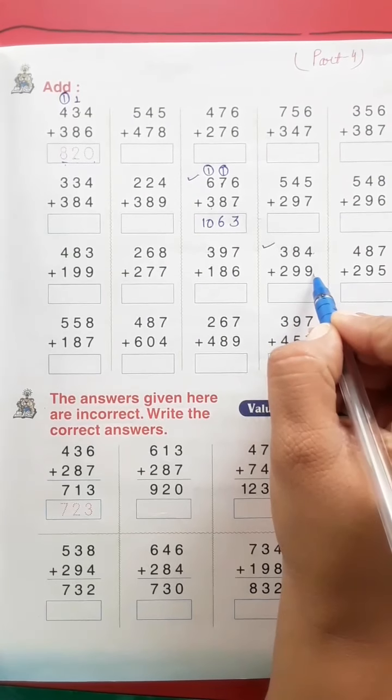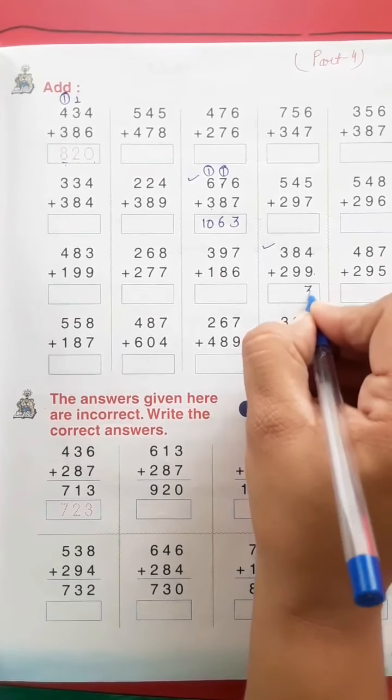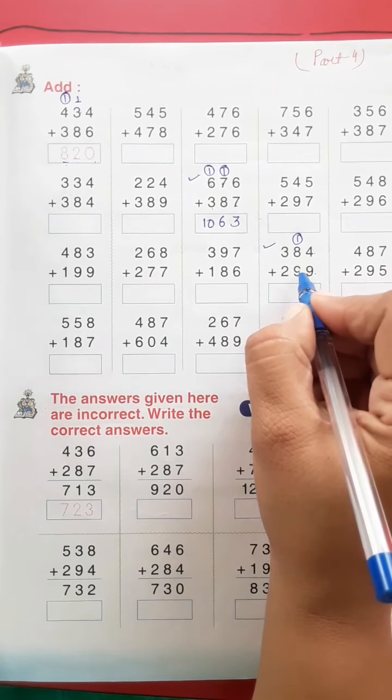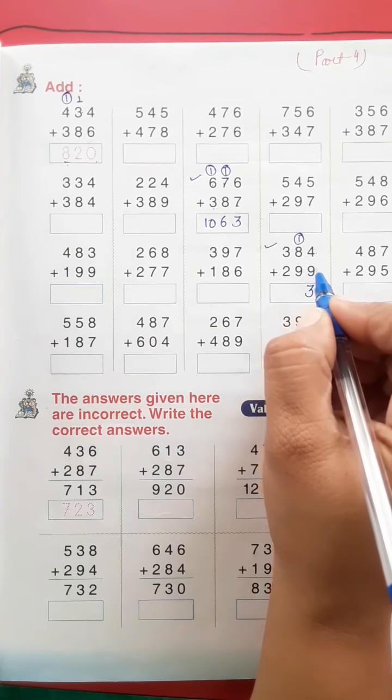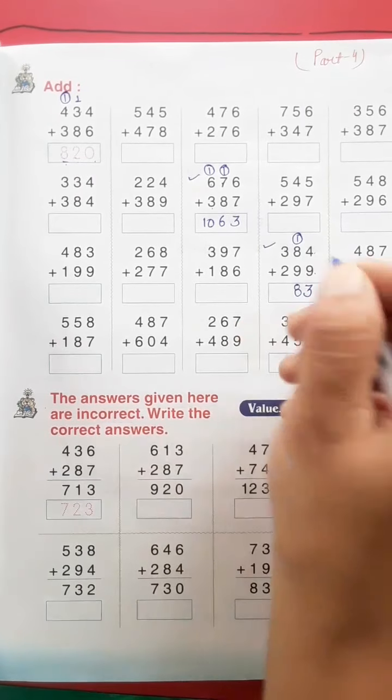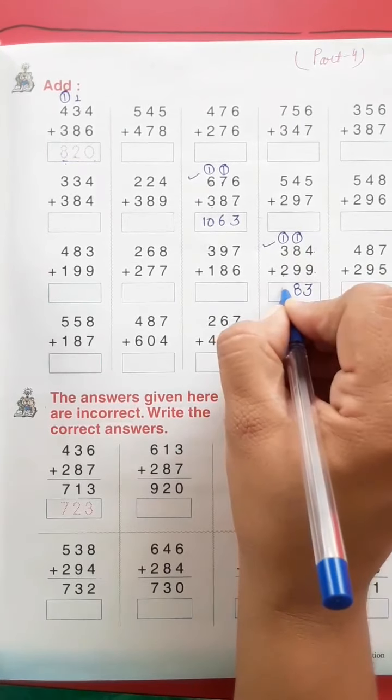Another sum, this one: four and nine is 13, 3 carry 1. Eight and nine is 17, plus 1 is 18, 8 carry 1. Three and two is five, plus 1 is six.